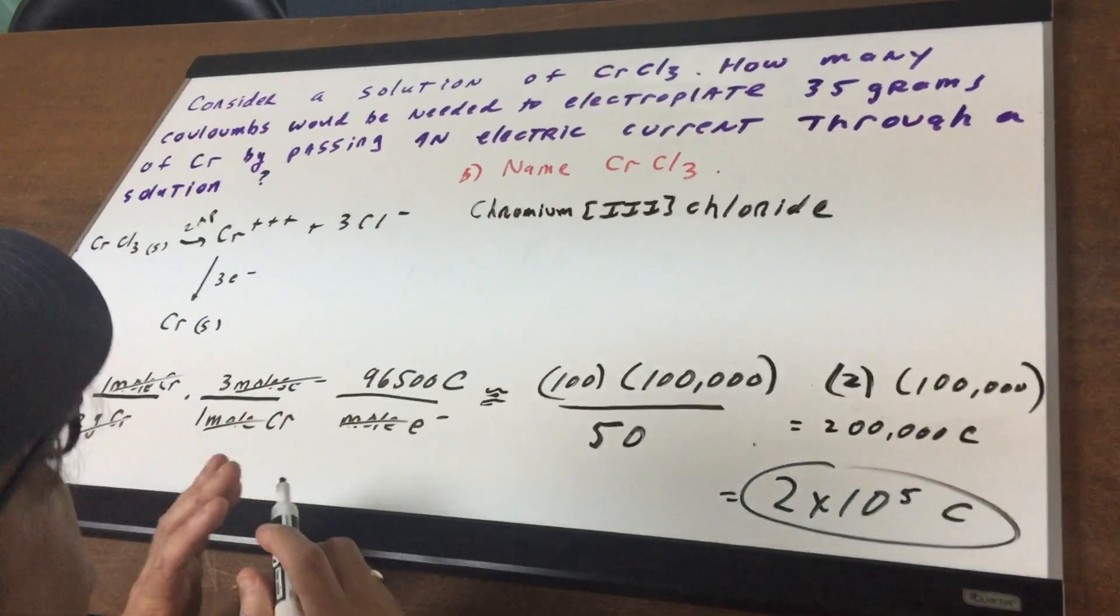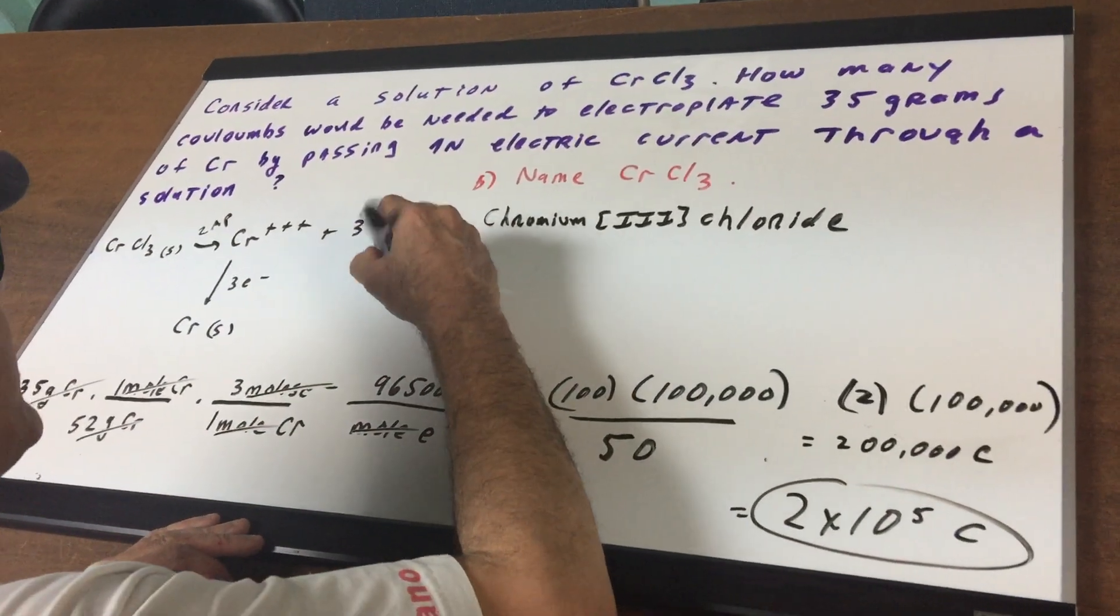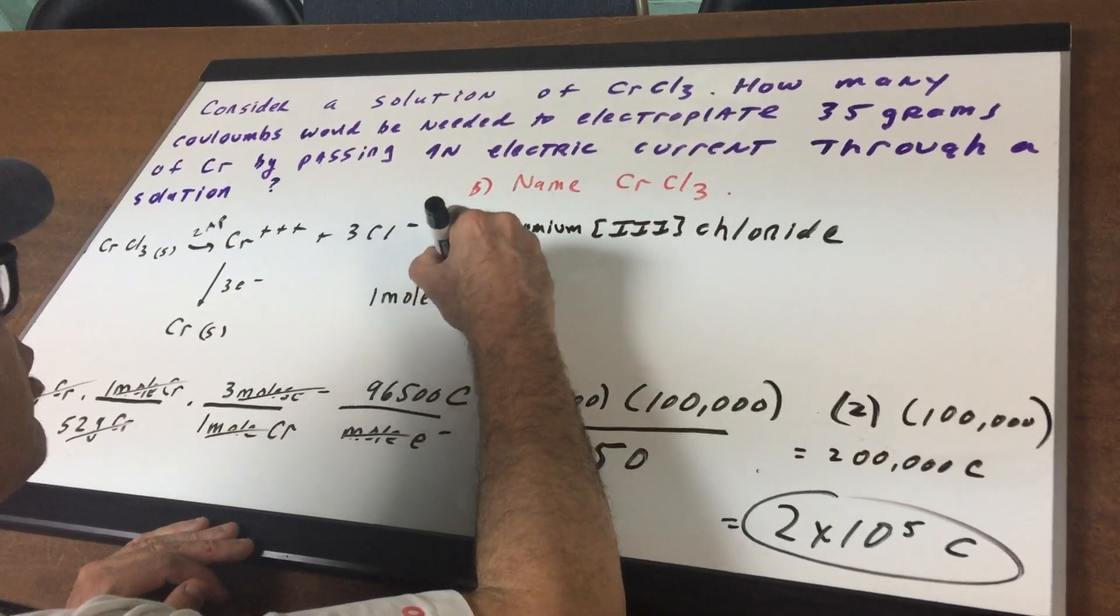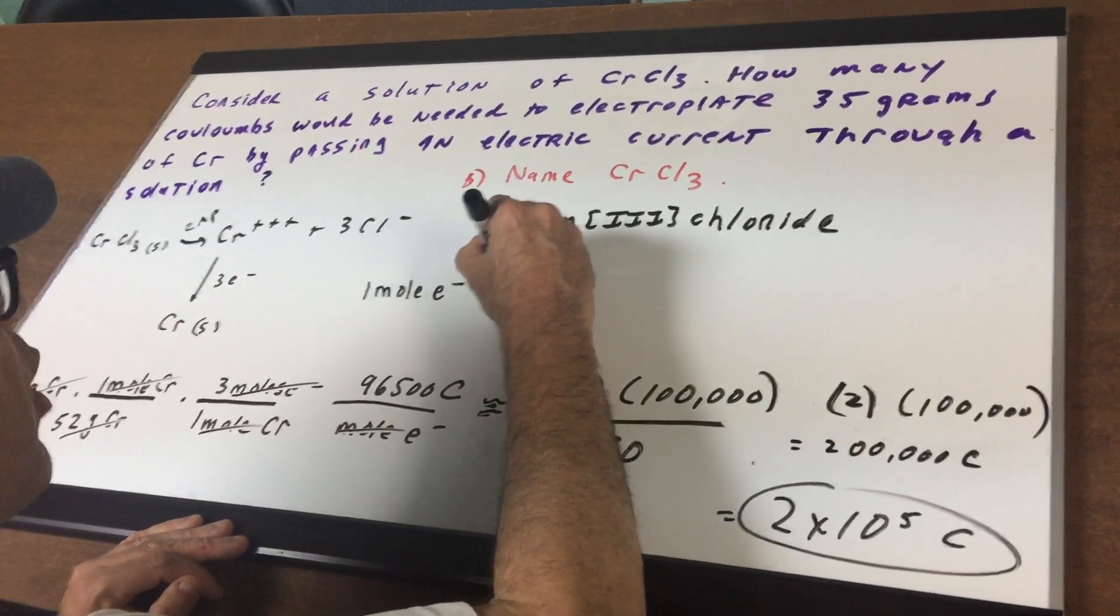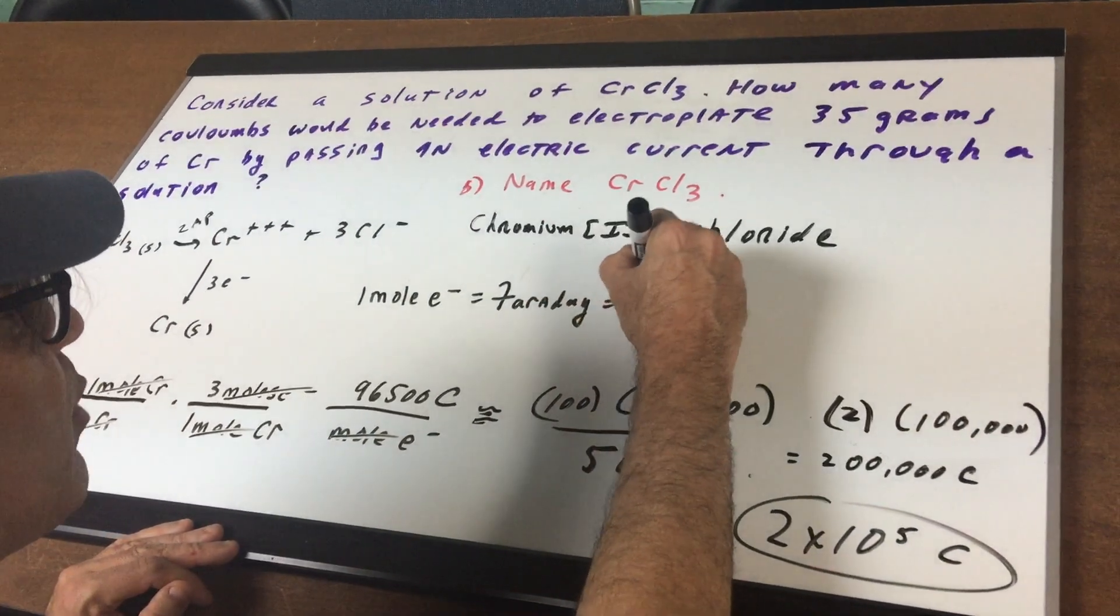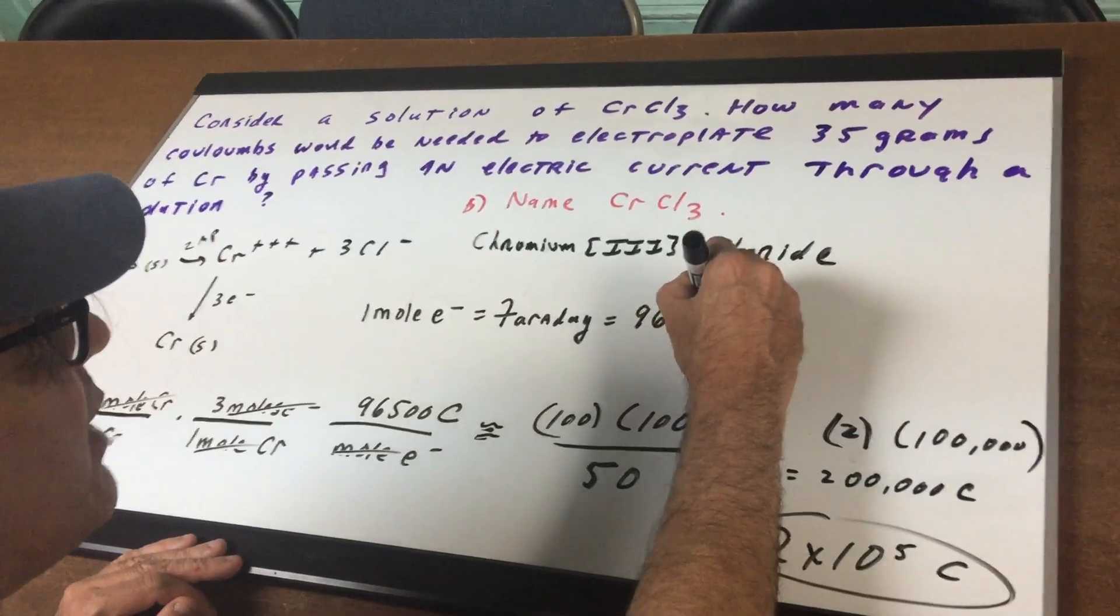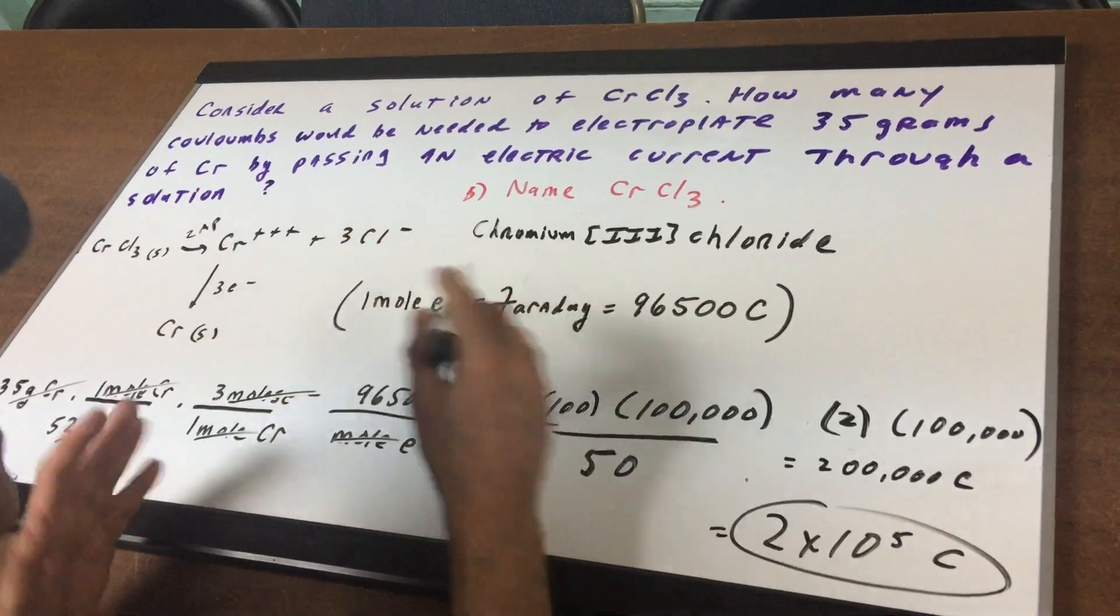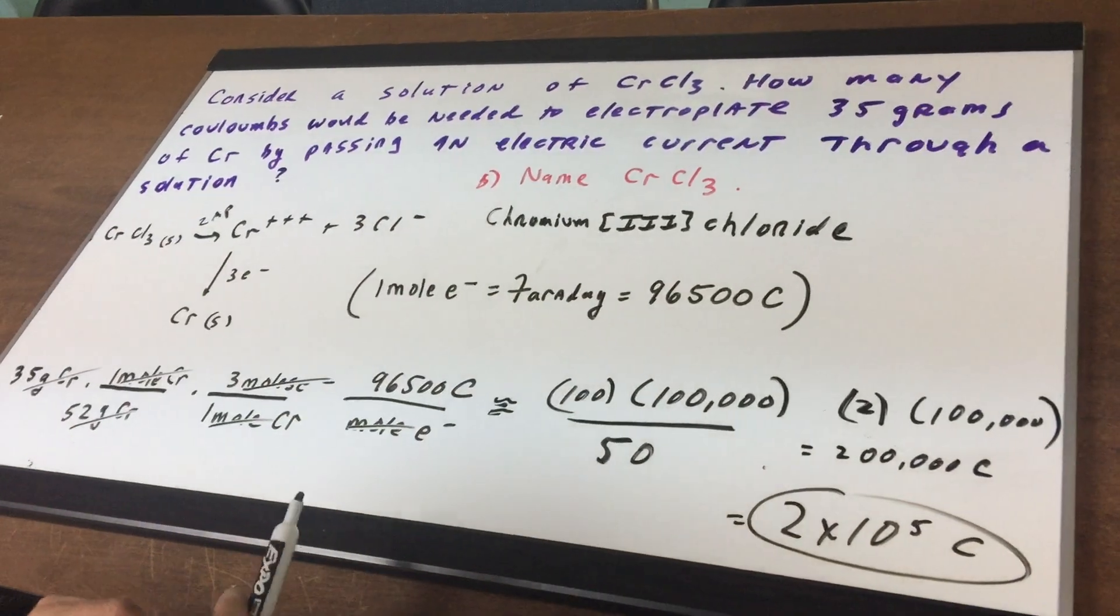Now, before we start the problem, the data is going to give you a conversion. I'll put it over here, that one mole of electrons is what we call a Faraday. And a Faraday is equal to approximately 96,500 coulombs. Don't memorize it, we'll give it to you.